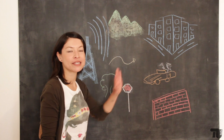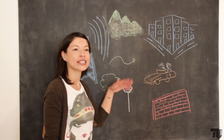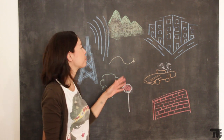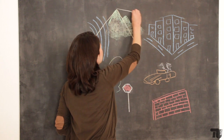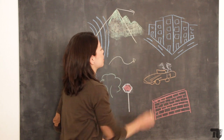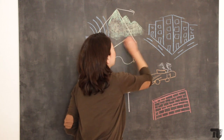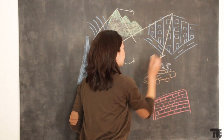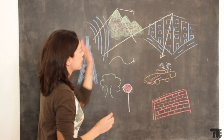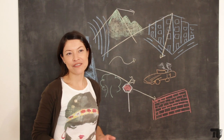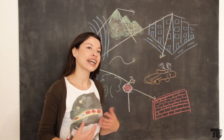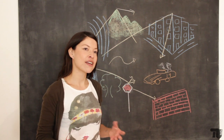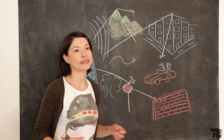In der Umgebung gibt es viele Faktoren, die die Signalausbreitung beeinflussen. Es könnten Berge sein oder auch Gebäude, die die Richtung der Signale ändern. Ein Ziel der Forschung ist es, Mechanismen zu entwickeln, die die Kapazität der Netzwerke verbessern.